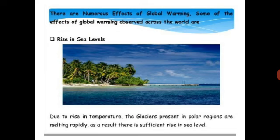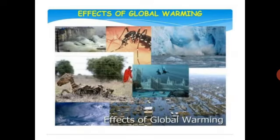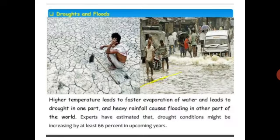Effects of global warming include melting of glaciers, flooding, earthquakes, and deaths of animals due to high heat. Higher temperatures lead to faster evaporation of water, causing drought in one part of the world, while heavy rainfall causes flooding in another. Experts have estimated that drought conditions might increase by at least 66% in upcoming years.